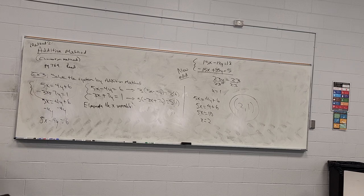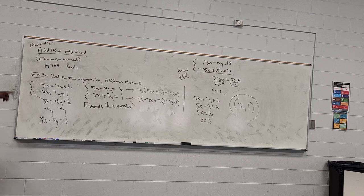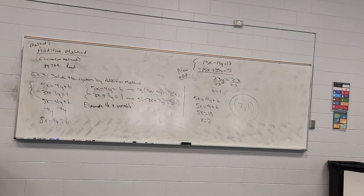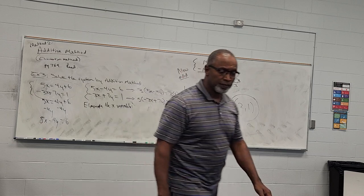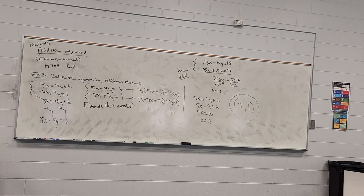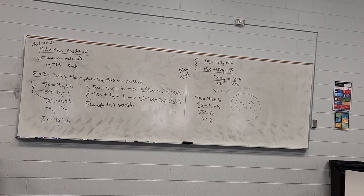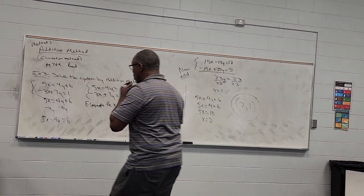If you check (2, 1) in both equations it will be the solution. These two lines cross at the point (2, 1) — this is a consistent system with one unique solution. That's how we do the addition method.